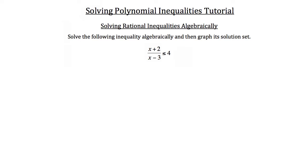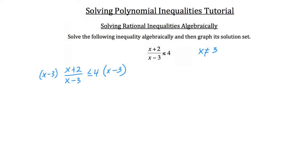In this problem we'll solve the following rational inequality algebraically and then graph its solution set. Looking at our inequality, x cannot equal 3 because that would make the denominator zero, which is undefined. We have (x plus 2) over (x minus 3) is less than or equal to 4. I'm going to multiply both sides by (x minus 3), which cancels the denominator on the left, leaving x plus 2 less than or equal to 4 times (x minus 3).